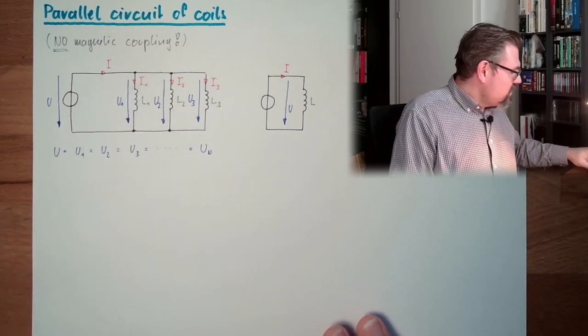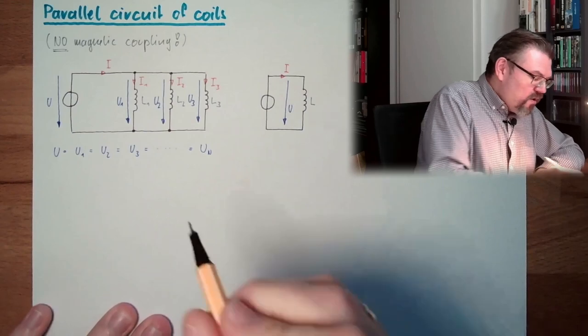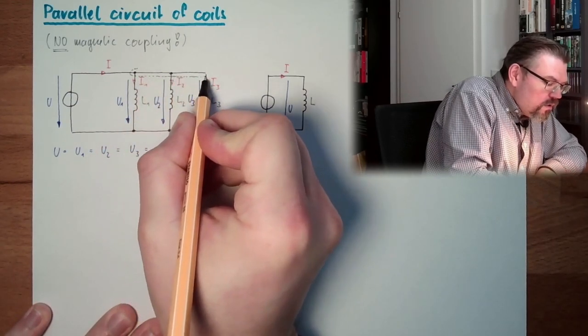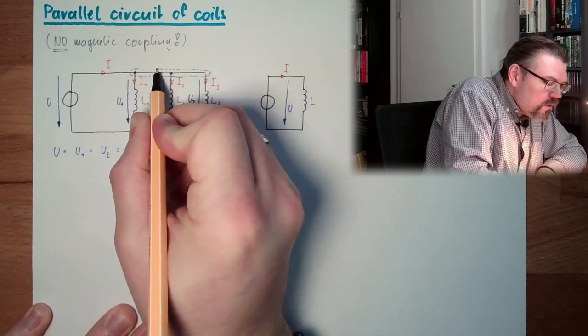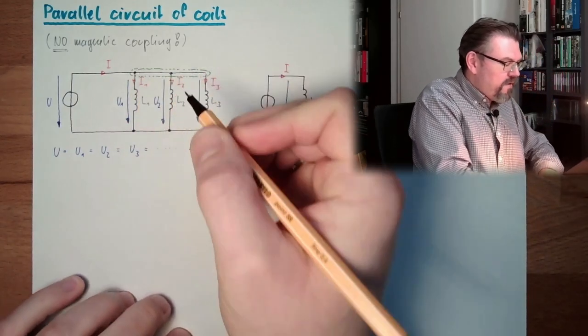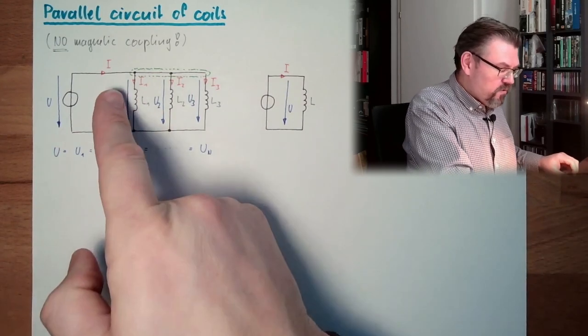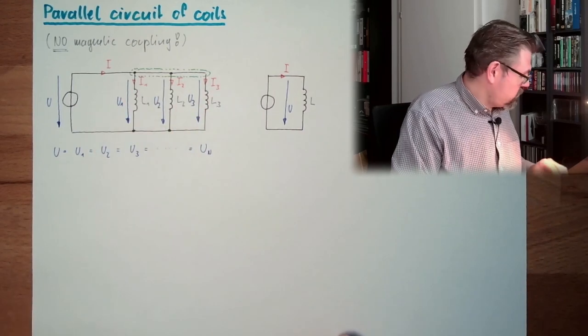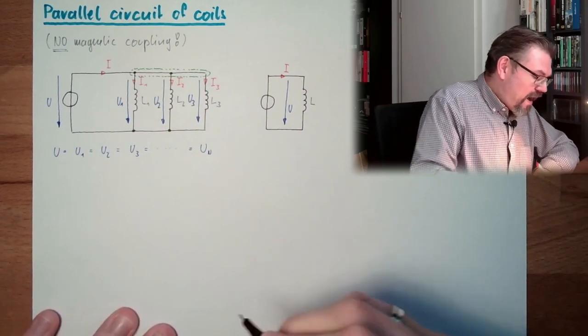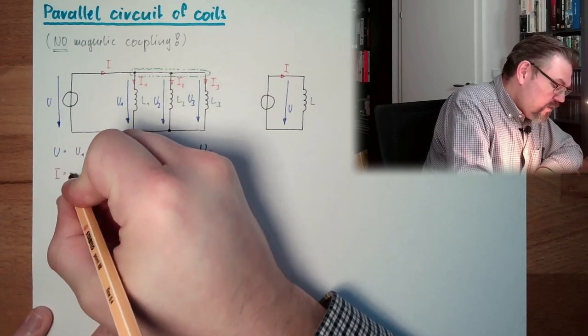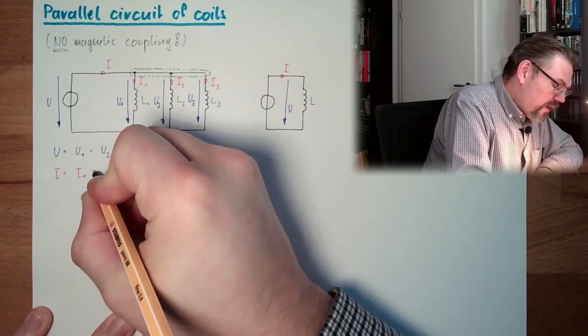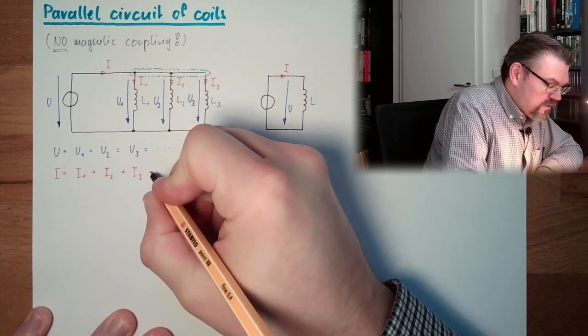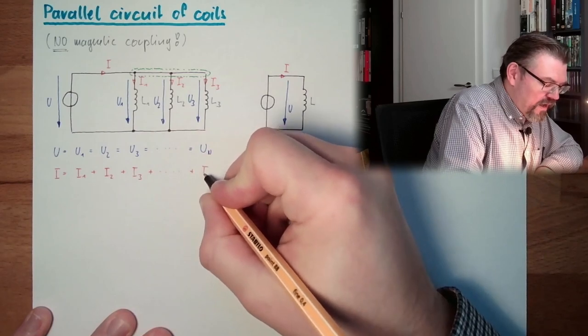Here, a second thing is, we have here a node. And if we have a look at this node, whatever is going in, this is only I, must be what is going out, and these are all others. So we have here I equals I1 plus I2 plus I3 plus and whatever plus IN.